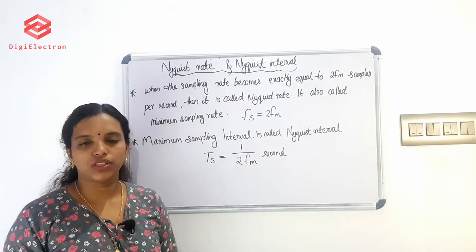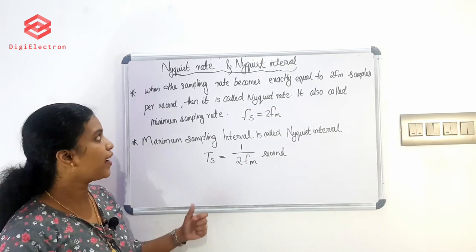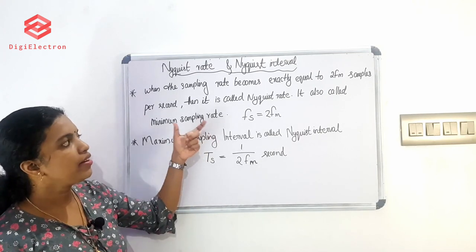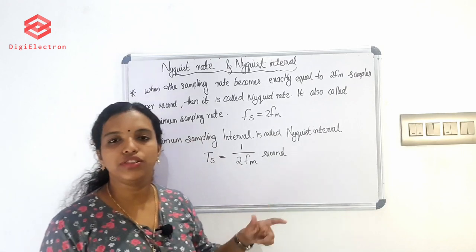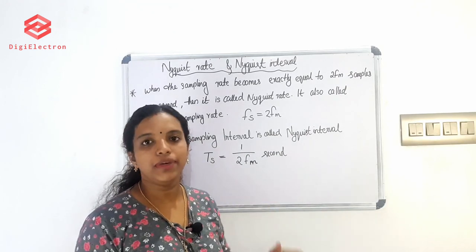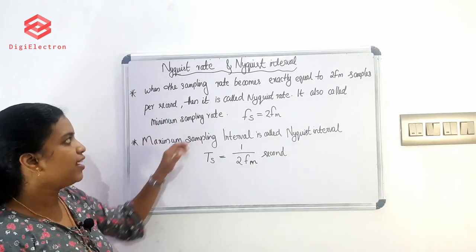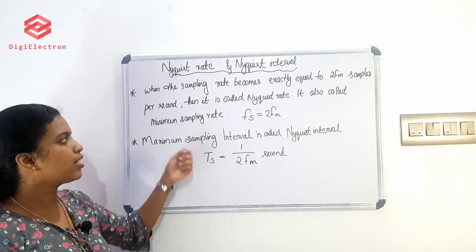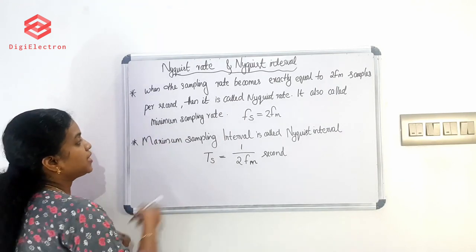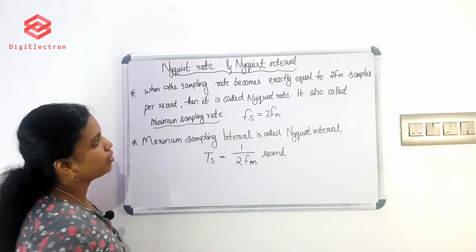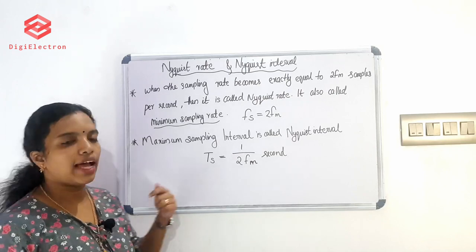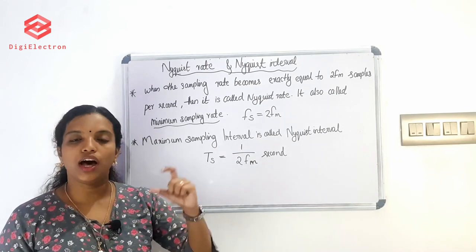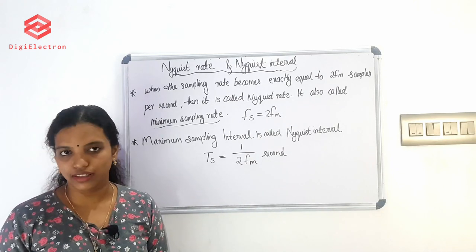Next, we will learn about the Nyquist rate and Nyquist interval. What is the Nyquist rate? When the sampling rate becomes exactly equal to 2Fm samples per second, it is called the Nyquist rate. The Nyquist rate is the minimum sampling rate, which is exactly equal to 2Fm.